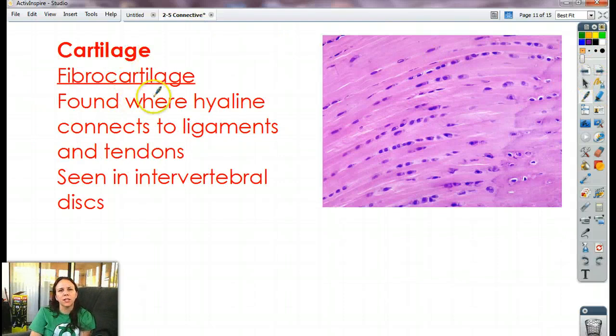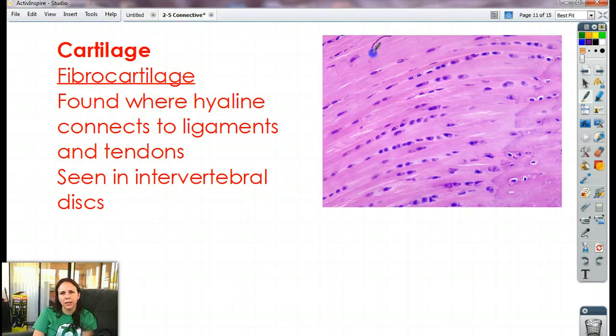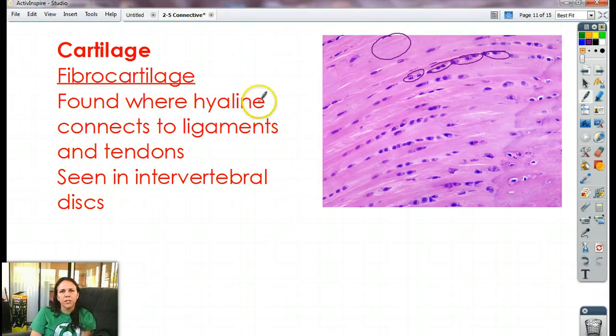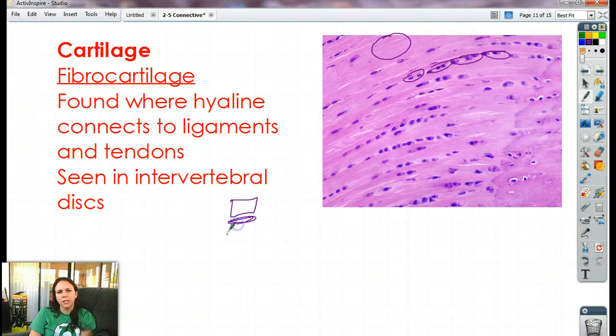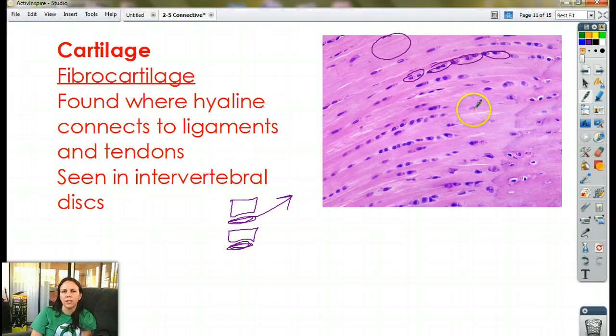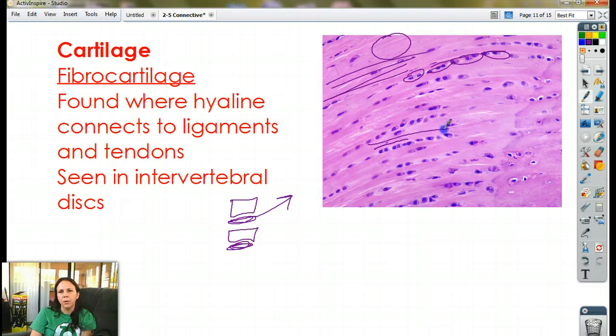Alright, and then we have fibrocartilage, which has a lot of fibrous material in it, like this stuff here, and squished lines of nuclei. So this is found where hyaline cartilage connects to ligaments and tendons. So it's at the attachment of bones and muscles. Usually seen in intervertebral discs. So you have a bone and a squishy disc, and a bone and a squishy disc. So the squishy disc would have this type of cartilage in it, fibro. Toughest out of all of them, because look at all the pain and pressure it has to withstand every day. So this one, look for what looks like beef jerky, but with big, long rows of nuclei inside.